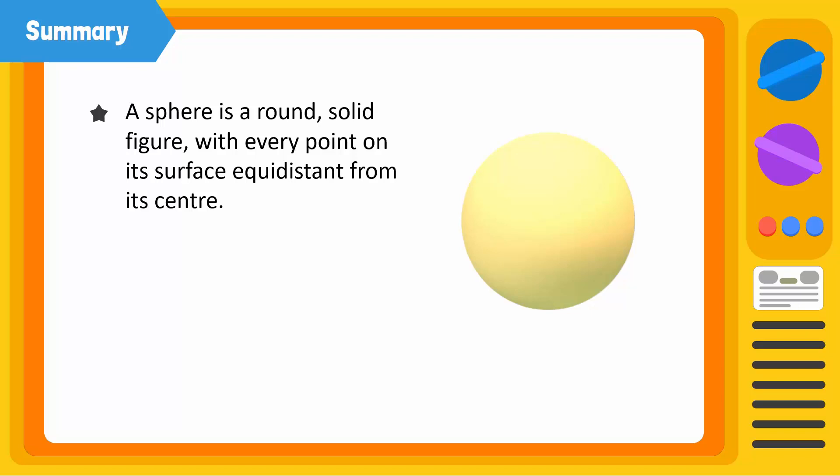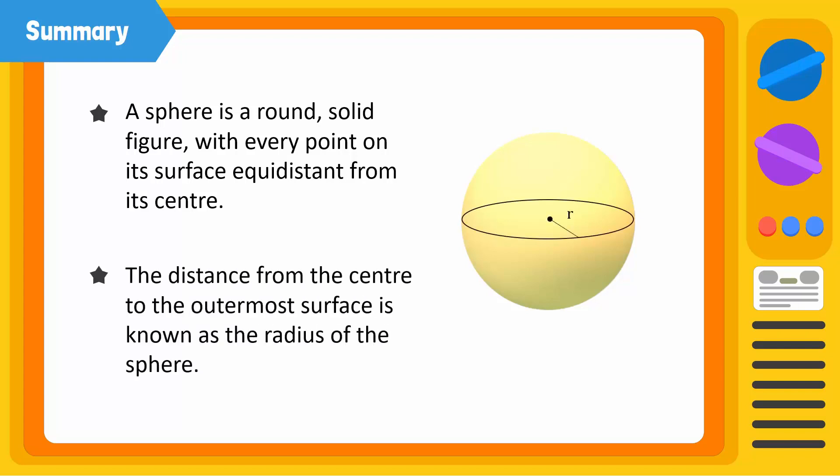Let's summarize. A sphere is a round solid figure with every point on its surface equidistant from its centre. The distance from the centre to the outermost surface is known as the radius of the sphere.